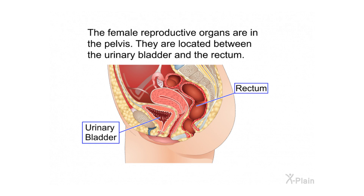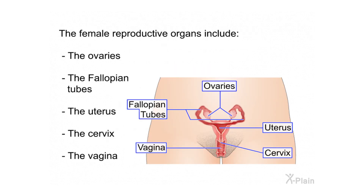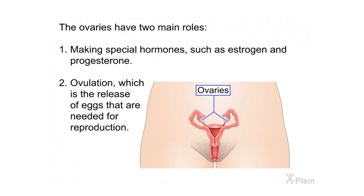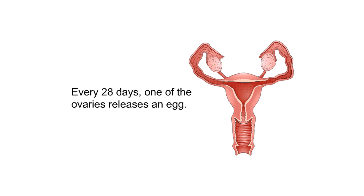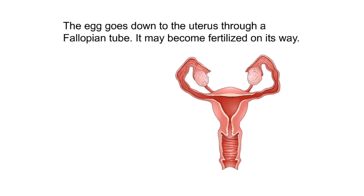The female reproductive organs are in the pelvis, located between the urinary bladder and the rectum. They include the ovaries, the fallopian tubes, the uterus, the cervix, and the vagina. The ovaries have two main roles: making special hormones such as estrogen and progesterone, and ovulation, which is the release of eggs needed for reproduction.